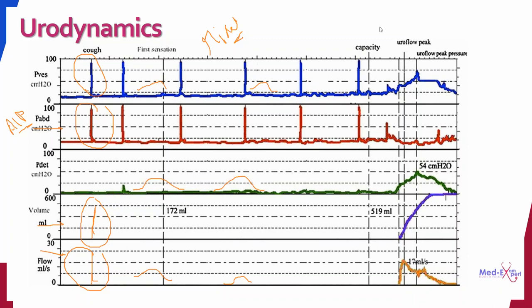Key summary of chart interpretation: the detrusor muscle never works during the filling phase — it only contracts during the voiding phase. Any rise in intra-abdominal pressure is reflected by an equal increase in intravesical pressure without an increase in detrusor pressure in a normal person. Any detrusor activity during filling is considered abnormal.